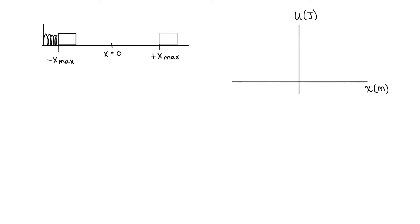Hey there! In this video we're going to take a look at an object connected to a spring moving from the maximum position of compression on the left, all the way through equilibrium to the maximum position on the right. We're going to draw a graph of potential energy versus position for this situation — a skill that's important in AP Physics C, where we need to create and interpret such graphs to talk about force.